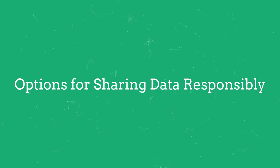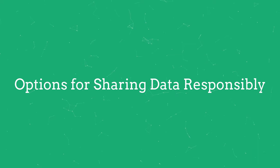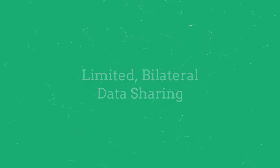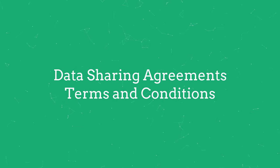If you determine that the information loss would be too high after applying certain disclosure control techniques, you still have options for sharing the data responsibly. This is when more limited bilateral sharing of the data under clear and strict conditions is appropriate. Consider establishing data sharing agreements and/or terms and conditions for different organizations wishing to access your microdata. On HDX, we provide the option to share datasets by request through something called HDX Connect, where organizations can share metadata about their data and then decide to grant access on a case-by-case basis.